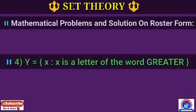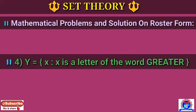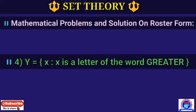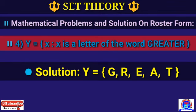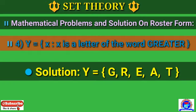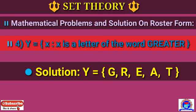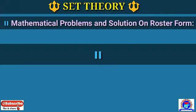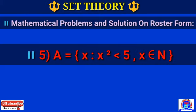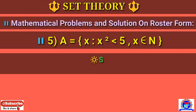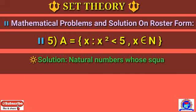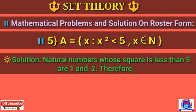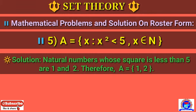Number 4: Y = {x | x is a letter of the word GREATER}. Solution: Y = {G, R, E, A, T}. Number 5: A = {x | x² < 5, x ∈ ℕ}. Natural numbers whose square is less than 5 are 1 and 2, therefore set A = {1, 2}. This is the way we understand roster form and its solutions.